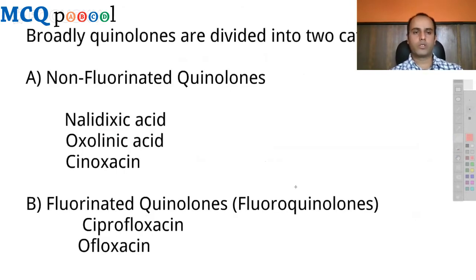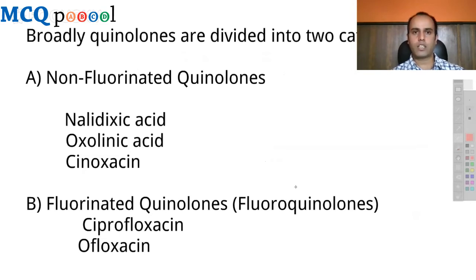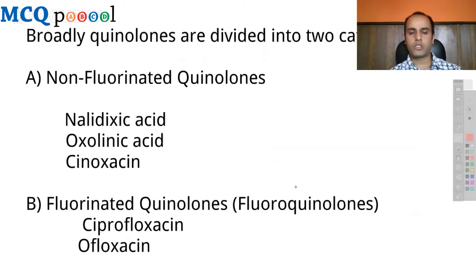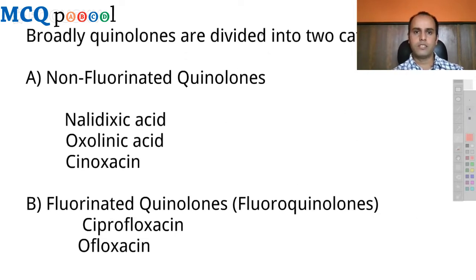Quinolones are broadly divided into two categories. First are the non-fluorinated quinolones: nalidixic acid, oxolinic acid, and cynoxacin. The others are fluoroquinolones or fluorinated quinolones. Ciprofloxacin and ofloxacin fall in the second generation of quinolones.